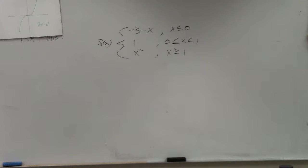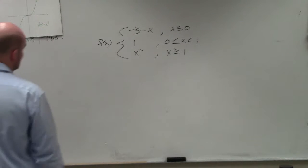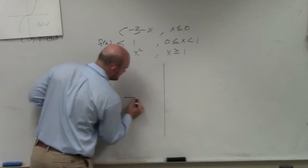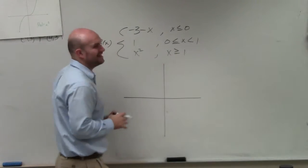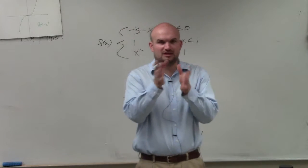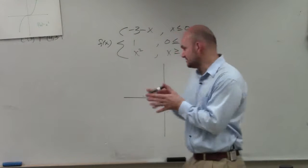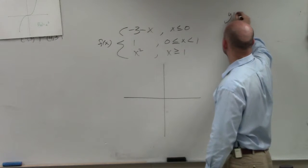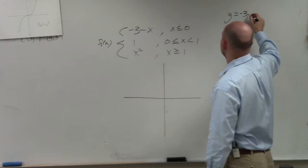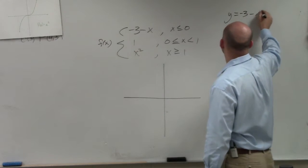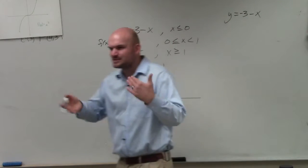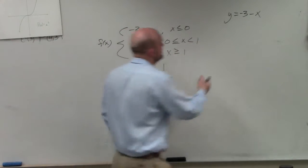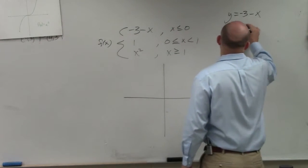Alright. So what I would recommend doing for these problems is to kind of graph them all on the same graph, and then start eliminating where they stand and where they don't stand. So first of all, negative 3 minus x. It might be easier to kind of look at that in just like a y equals mx plus b format, just to kind of because that's how we've practiced graphing before.